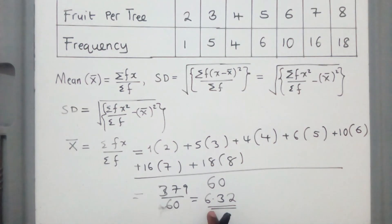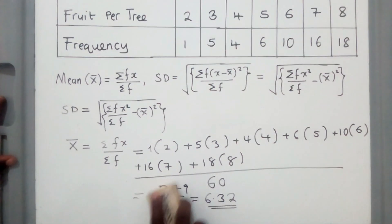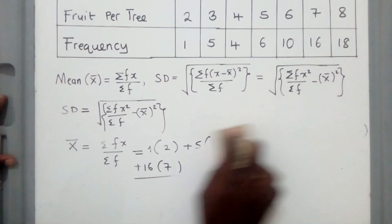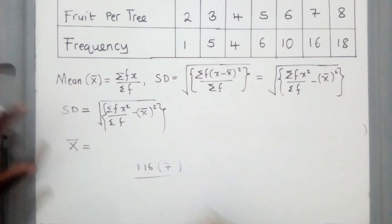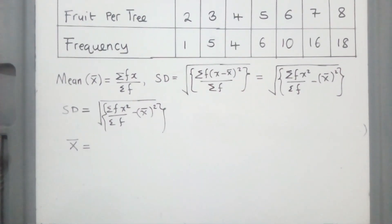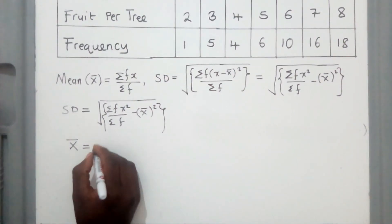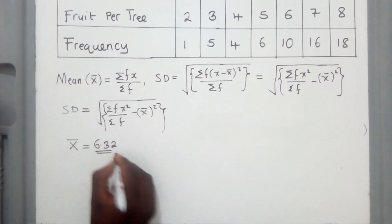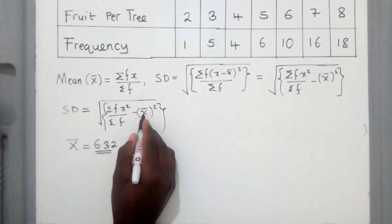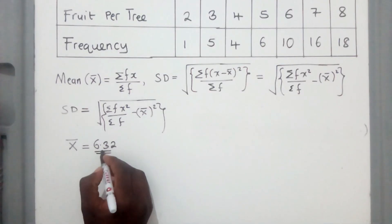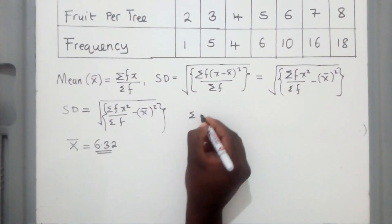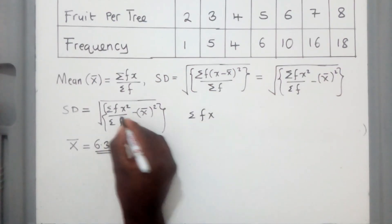Our mean is 6.32. Now I need to find Σfx²/Σf to put into the standard deviation formula.